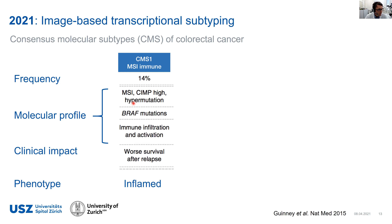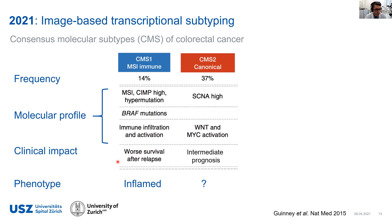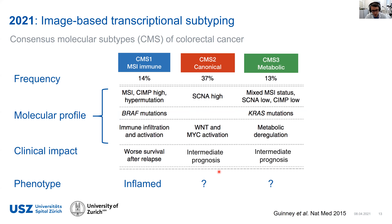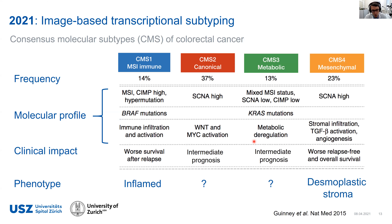The first subgroup, CMS1, is correlated to the MSI genotype in colorectal cancer, characterized by immune infiltration and activation. In early stages these cases have a very good outcome, but at late stages — especially after relapse — they are very hard to treat with poor survival. CMS2, called canonical, is the most common group, characterized by WNT and MYC activation with intermediate prognosis. CMS3 is characterized by KRAS mutations, metabolic deregulation, and intermediate clinical prognosis. CMS4, the second most common group, is clinically very important: characterized by stromal infiltration, epithelial-mesenchymal transition, TGF-beta activation, and very poor relapse-free and overall survival.